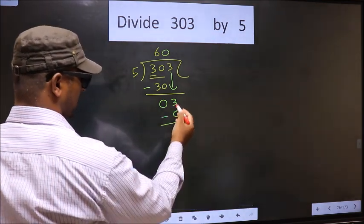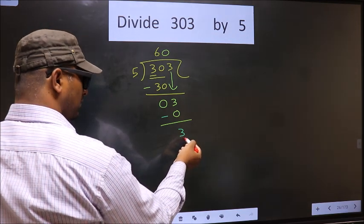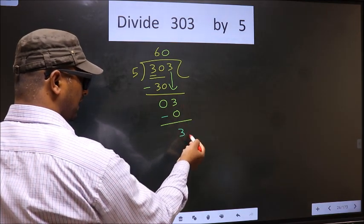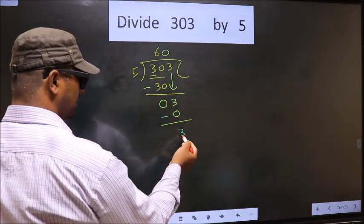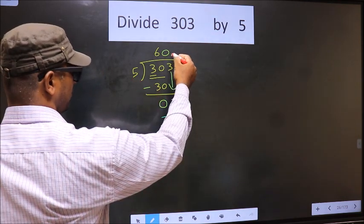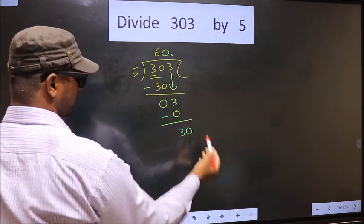Now you subtract 3 minus 0, 3. Now over here we did not bring any number down, and 3 is smaller than 5. So now you can put a dot and take 0 here.